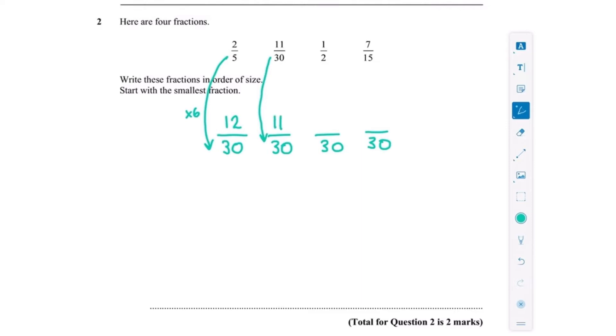With the third one, we've multiplied the denominator by 15, so I also need to multiply the numerator by 15, and that is 15. With the last one, I've multiplied the denominator, the bottom number, by 2, so I also need to multiply the numerator by 2. So that's going to be 14.